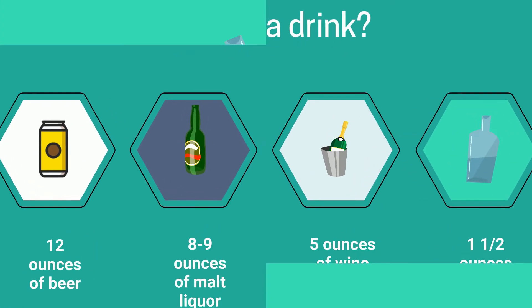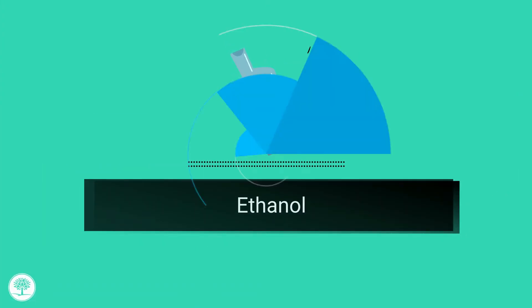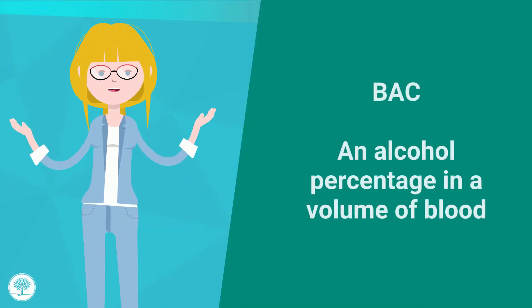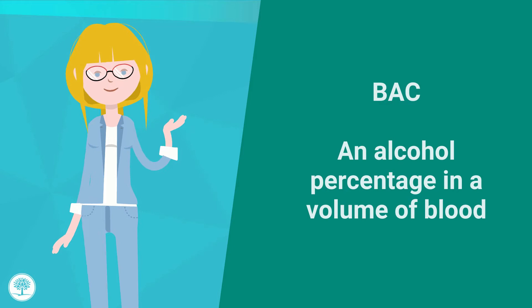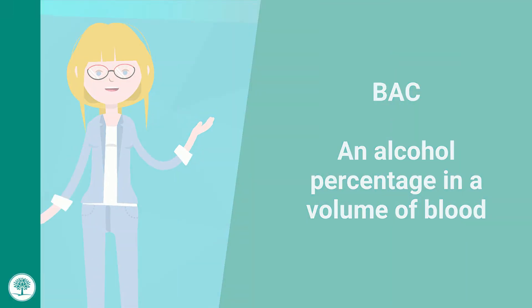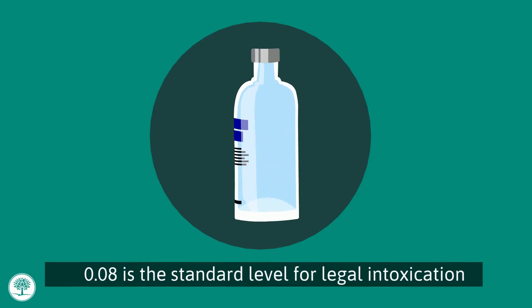Ethanol's effects from alcohol are related to the blood alcohol content — we call it BAC. It is an alcohol percentage in a volume of blood. You will see different ways to list it, but generally 0.08 is the standard level for legal intoxication.